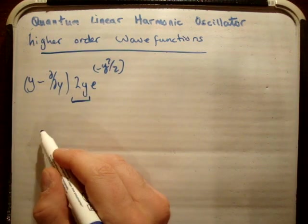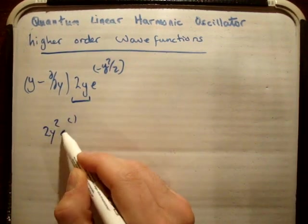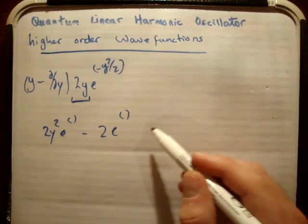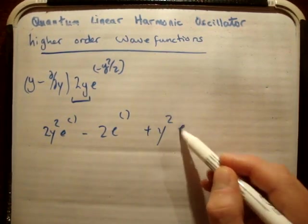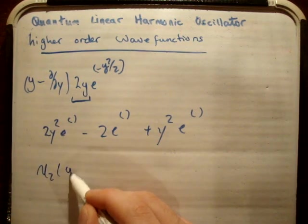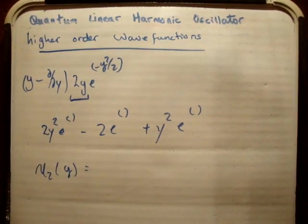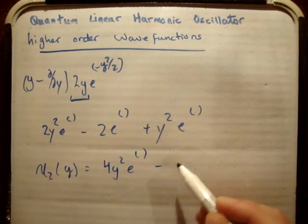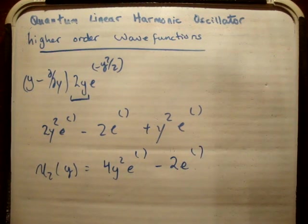I'm not going to be too rigorous with this. So your answer here is going to be 2y squared e to the minus y squared over 2, and you're going to have to take away from that 2 times e to the minus y squared over 2, and you're going to add to that y squared e to the minus y squared over 2. So u2 of y in the end is going to equal 4y squared e to the minus y squared over 2 minus 2 times e to the minus y squared over 2. That's your second order or your third wave function, u2 of y.